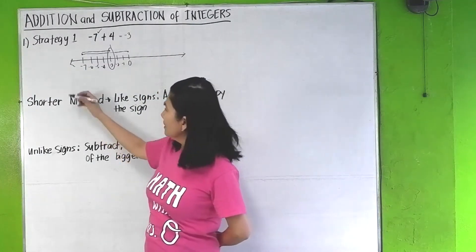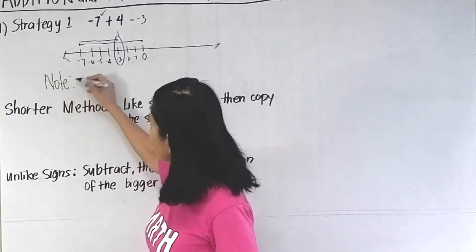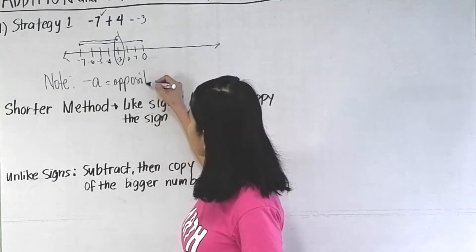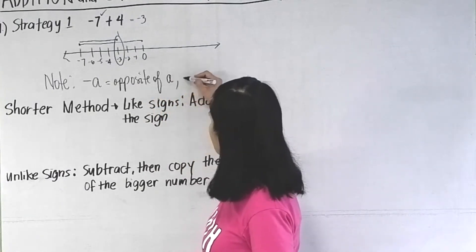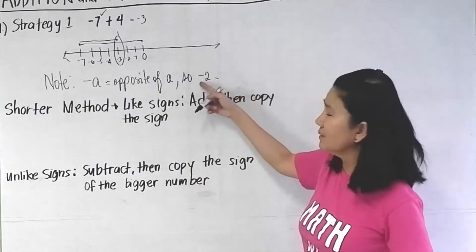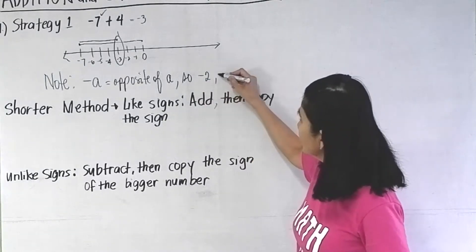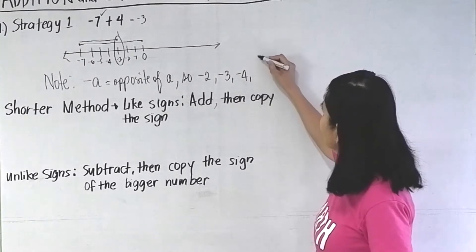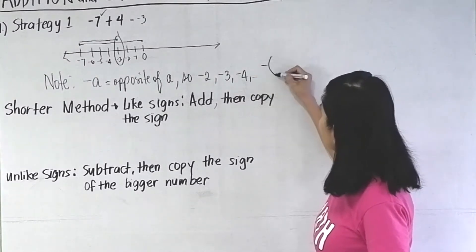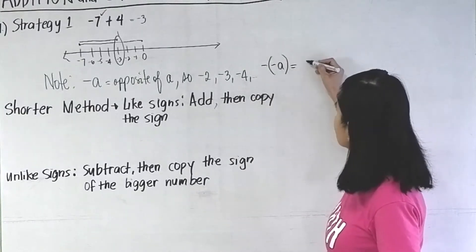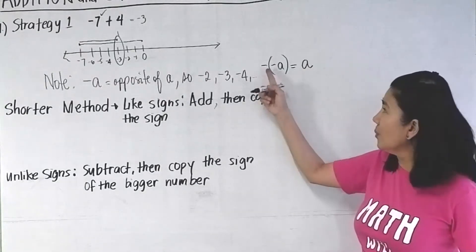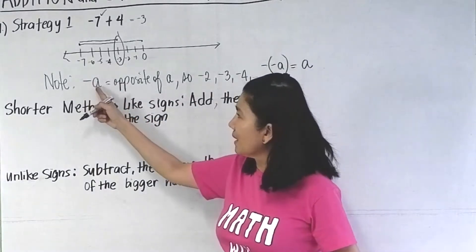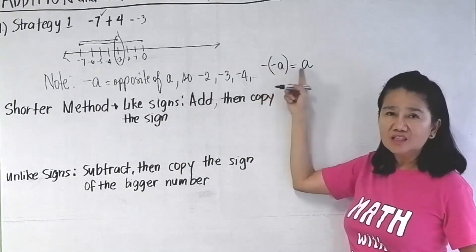Before we proceed to the shorter method, let us remember that when we say negative A, we're referring to the opposite. So if we have negative 2, this is simply the opposite of 2. Negative 3 is the opposite of 3, and negative 4 is the opposite of 4. Therefore, negative of negative A will give us a positive A. The opposite of a negative A is positive A, and the opposite of a positive A is negative A.